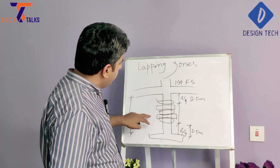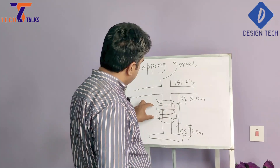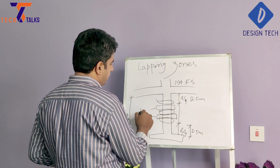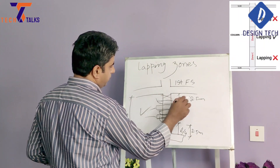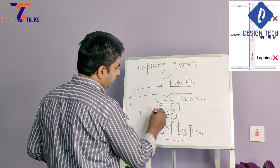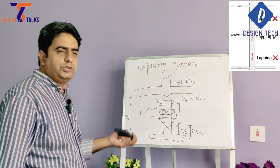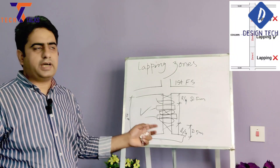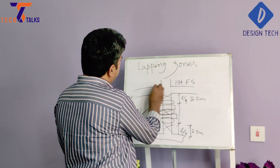So we should keep our lapping zone in between — not within L/4 from the ends and not at the center. This is the perfect location for the lap. We should avoid lapping near the top, near the bottom, and at mid-height. We choose our lap in the intermediate zones on either side of center.